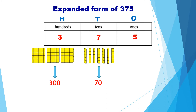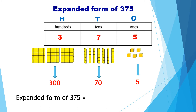Now, the ones place. We have five ones, so we will take five unit blocks — one, two, three, four, five. Five ones means the value is 5. Now we will add these values. Therefore, the expanded form of 375 is 300 plus 70 plus 5.